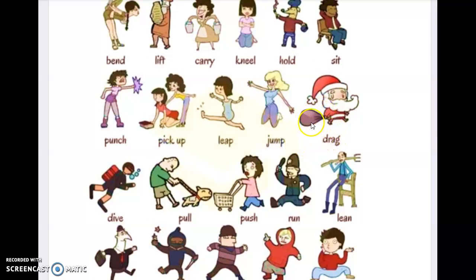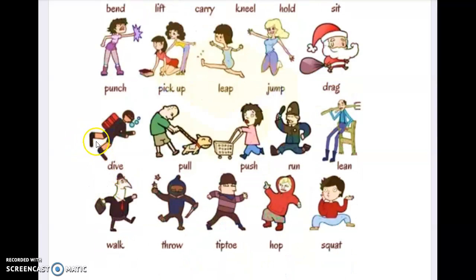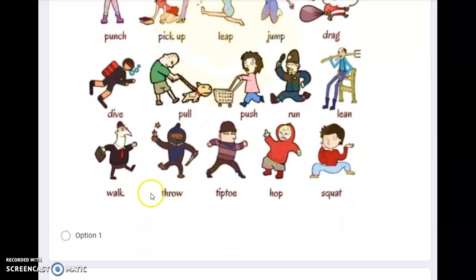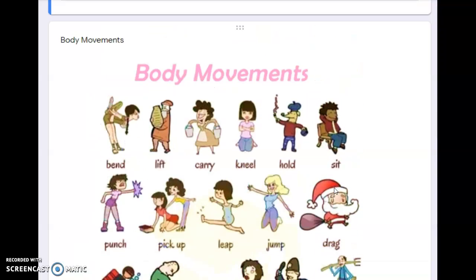Drag — look at this, it's too heavy for Santa to bring, so he's dragging it. Dive is when you go swimming. Pull — you know pull. Push. Run. Lean is like when you're just not sitting down, just leaning only a little bit. And then you walk. Throw. Tiptoe. Hop. Squat. So these are just examples of body movements.